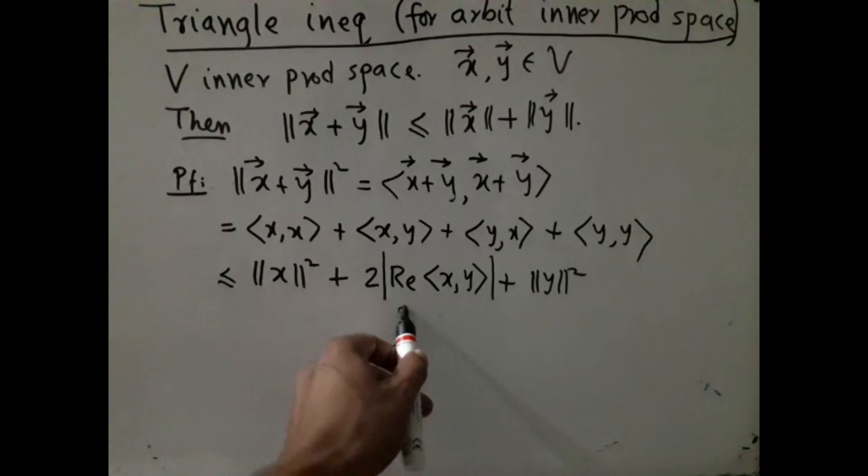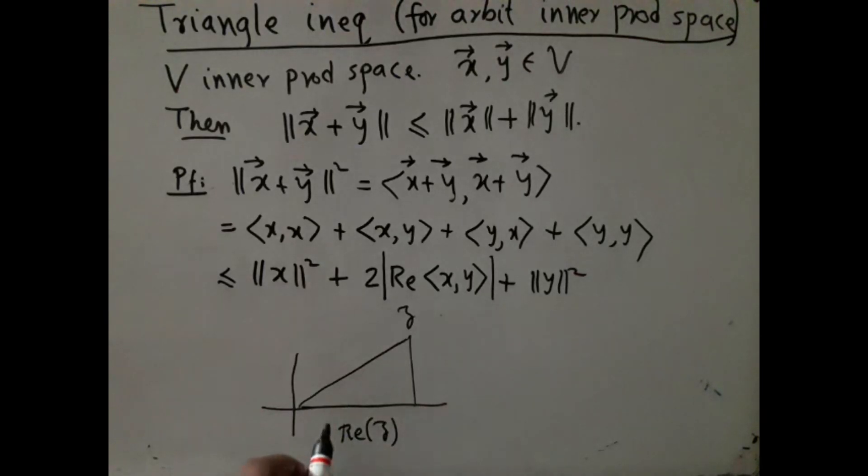Suppose z is some complex number and this is the origin. In that case, this part is the real part of z. I am working with only the length, so I will take the absolute value, and this is the modulus of z. Again, Pythagoras idea holds. You can see that the modulus is greater than or equal to |Re(z)|. Which means for any complex number, the absolute value of its real part must be less than or equal to its modulus. We are going to employ that here.